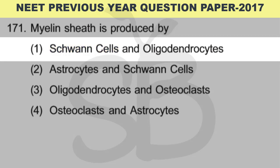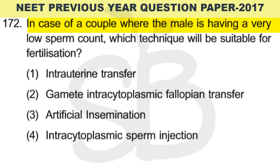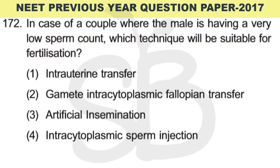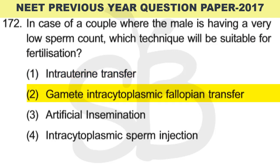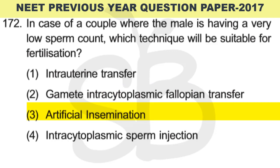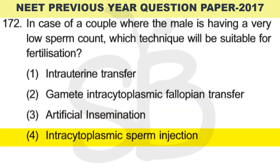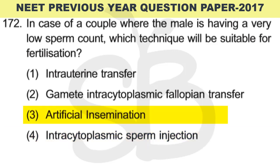Question number 172: In a couple where the male has a very low sperm count, which technique will be suitable for fertilization? The options are: option 1, intrauterine transfer; option 2, gamete intrafallopian transfer; option 3, artificial insemination; and option 4, intracytoplasmic sperm injection.